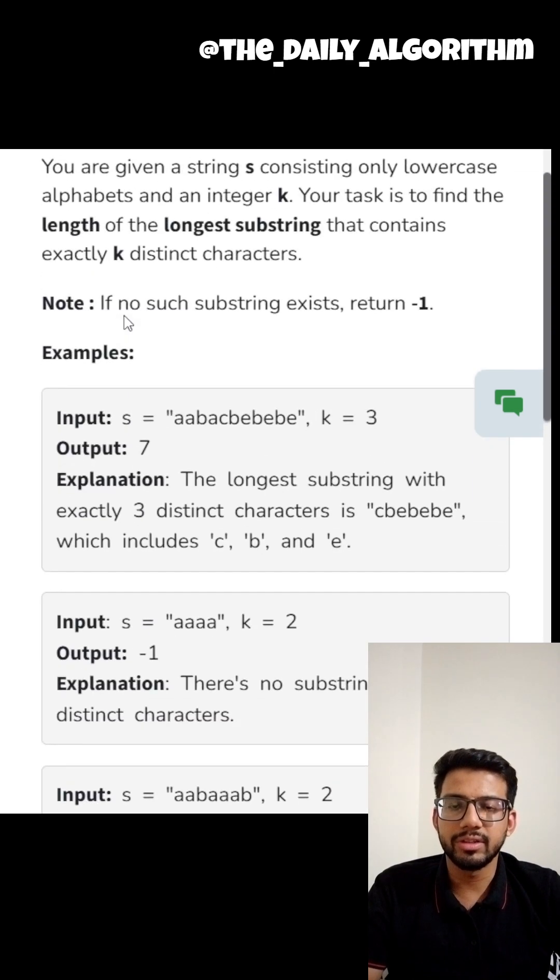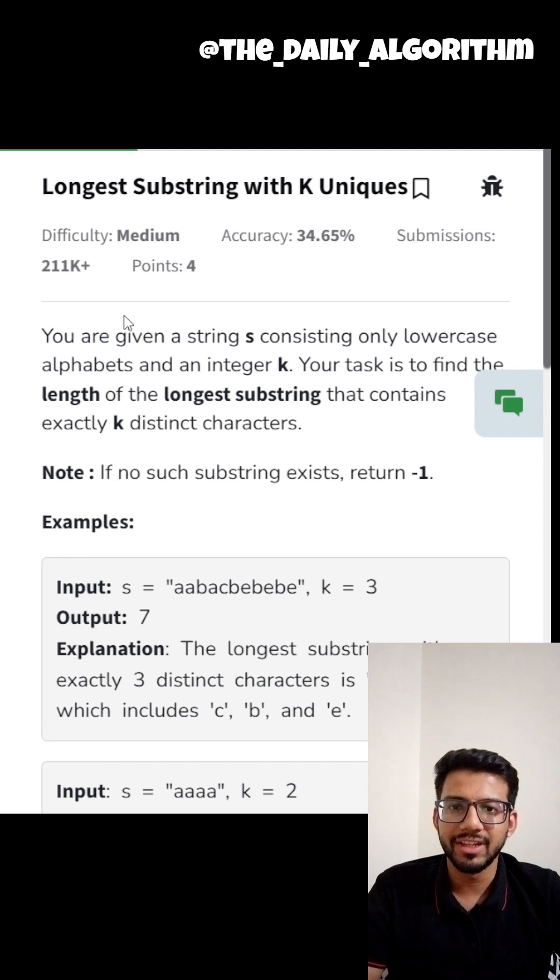Seeing the constraints, we can directly rule out the brute force solution of using two for loops. And we are sure that the solution that we have to give should have a complexity of O of n log n or O of n.